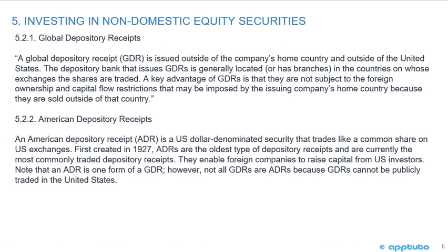A global depository receipt (GDR) is issued outside of the company's home country and outside of the United States. The depository bank that issues GDRs is generally located or has branches in the countries on whose exchanges the shares are traded. A key advantage of GDRs is that they are not subject to the foreign ownership and capital flow restrictions that may be imposed by the issuing company's home country.